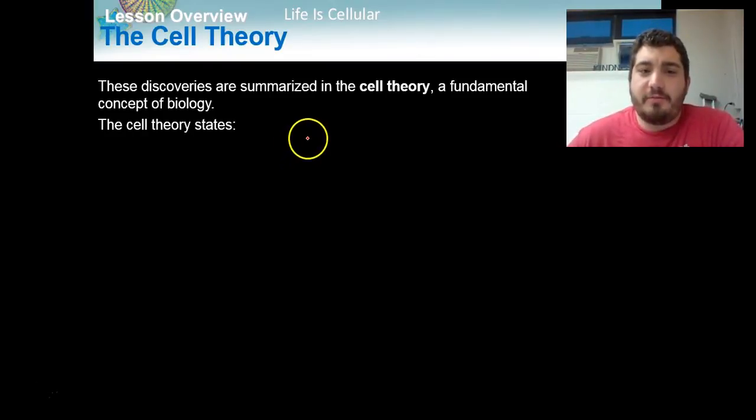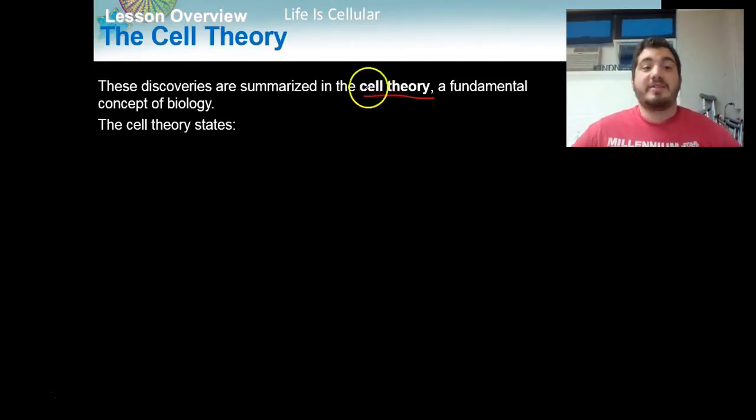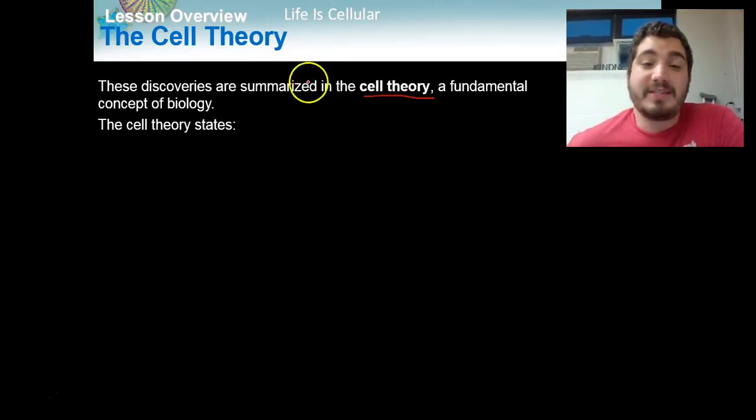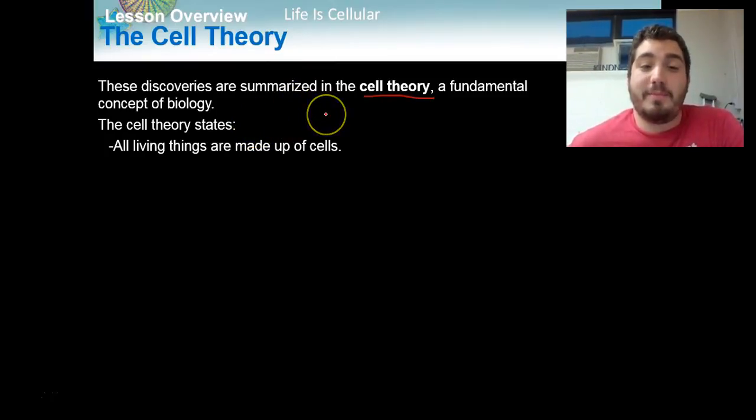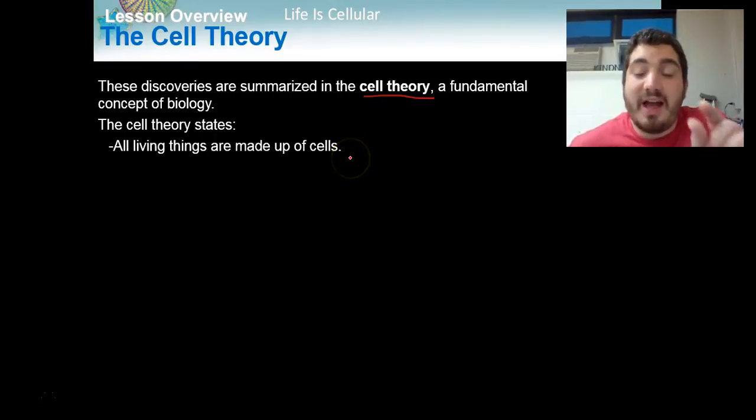So after hundreds of years of research and people starting to look through microscopes at living organisms and studying cells, all these scientists started to discover new things about cells. And they created what is called the cell theory, which is a fundamental concept of biology. All biology really, as you break it down, all different types of life, is based around the cell theory. And the cell theory states three things. The first is that all living things are made up of cells. And this is one of the characteristics of life we talked about in the beginning of the year. All living things, whether it's one tiny, tiny little bacteria up to a giant blue whale, they're all made up of cells. Cells are the units that make them up.